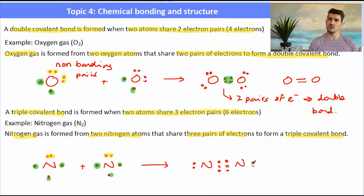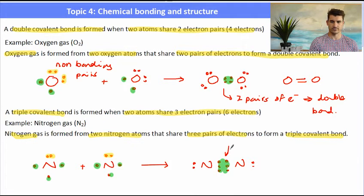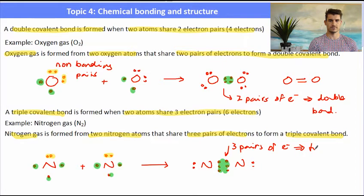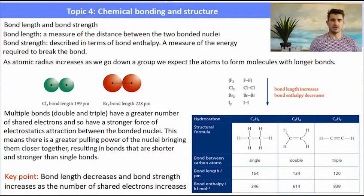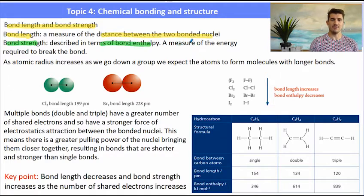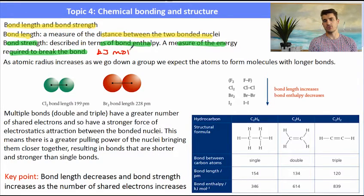A triple covalent bond is shorter and stronger than both a double and a single covalent bond. Moving on: bond length is a measure of the distance between the two bonded nuclei. Bond strength is described as the bond enthalpy — a measure of how much energy is required to break the bond, measured in kilojoules per mole. That's how many kilojoules of energy we need to break one mole of those bonds. That information can be found in the data book.